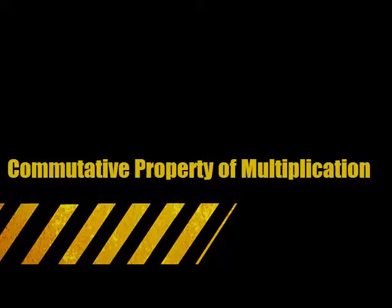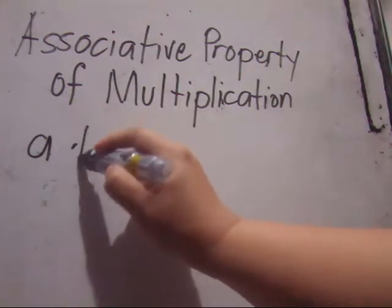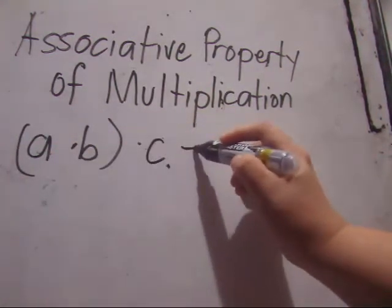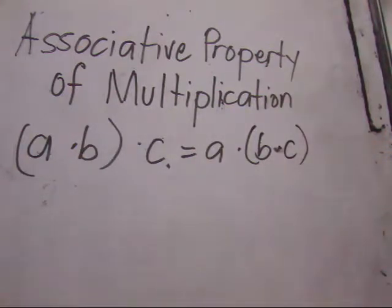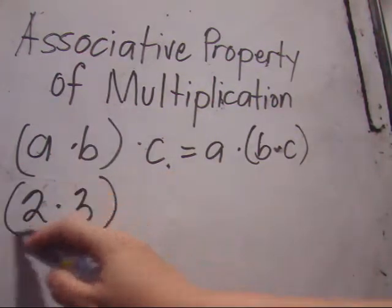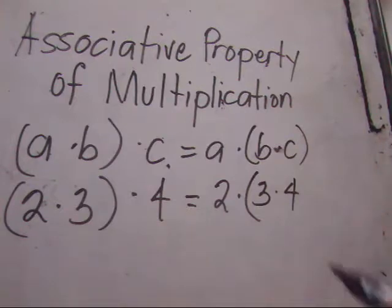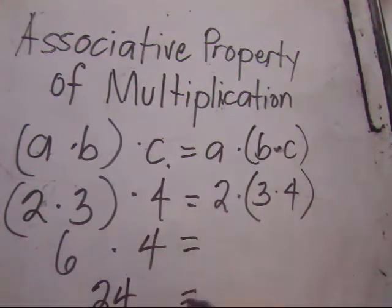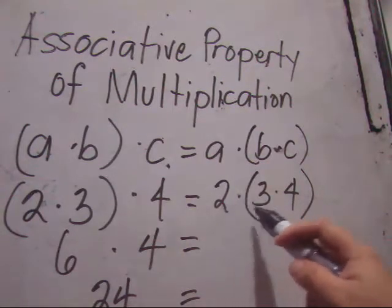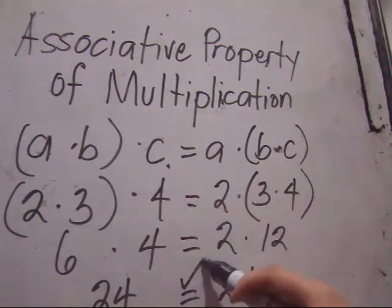Another property is the associative property of multiplication. It states that even if we multiply the same numbers with different groupings and then multiply to the third, it will still be the same. For example, (2 times 3) times 4 is equal to 2 times (3 times 4). Let's solve: 2 times 3 is 6, times 4 equals 24. On the other side, 3 times 4 is 12, and 2 times 12 is also equal to 24. So they both have the same product.